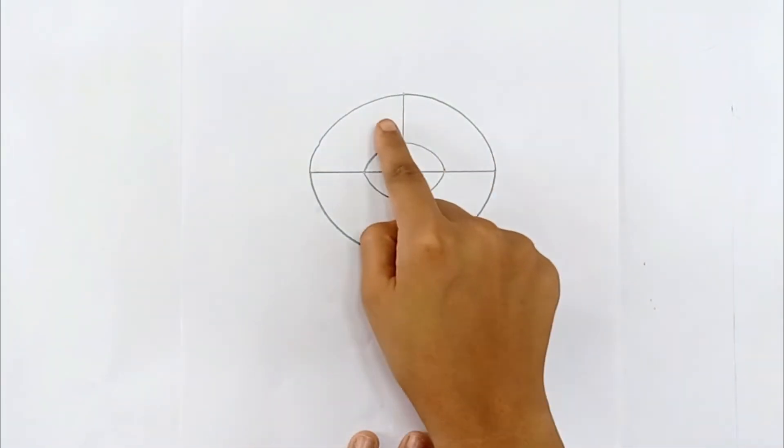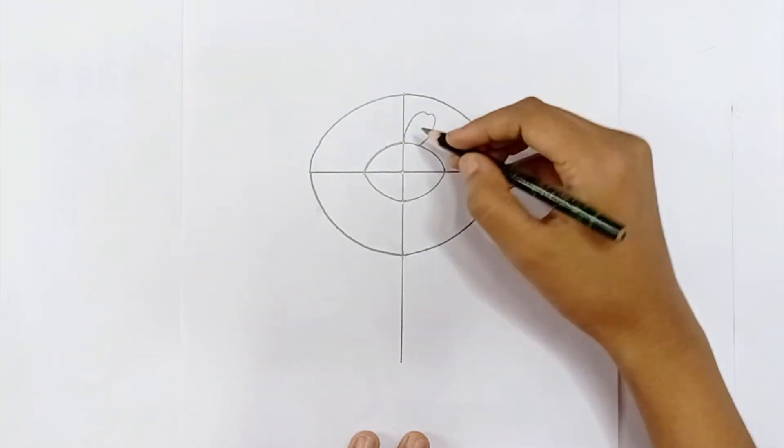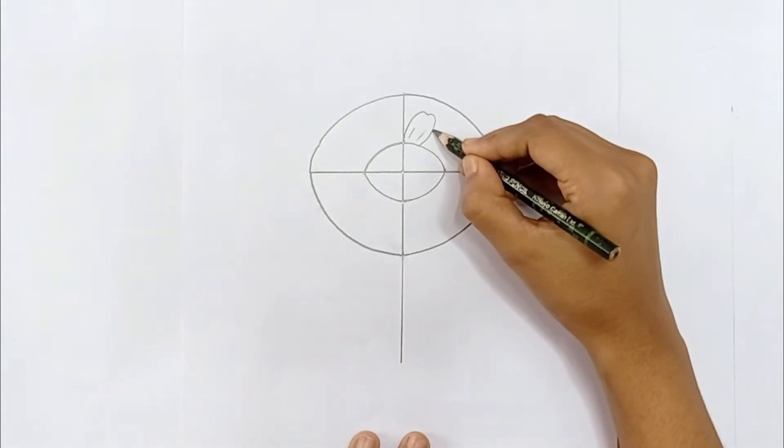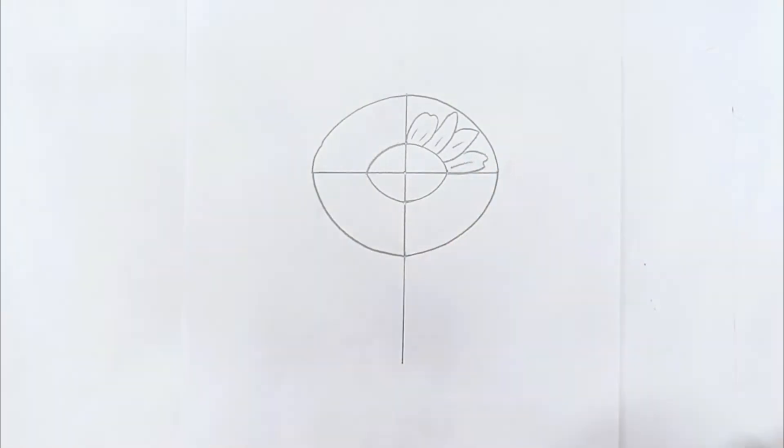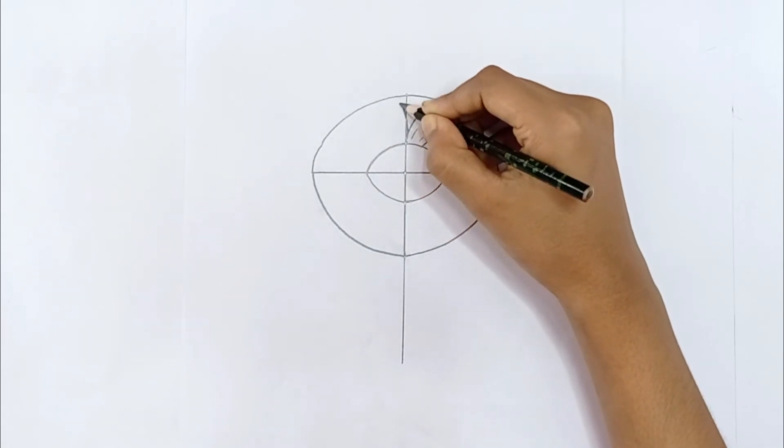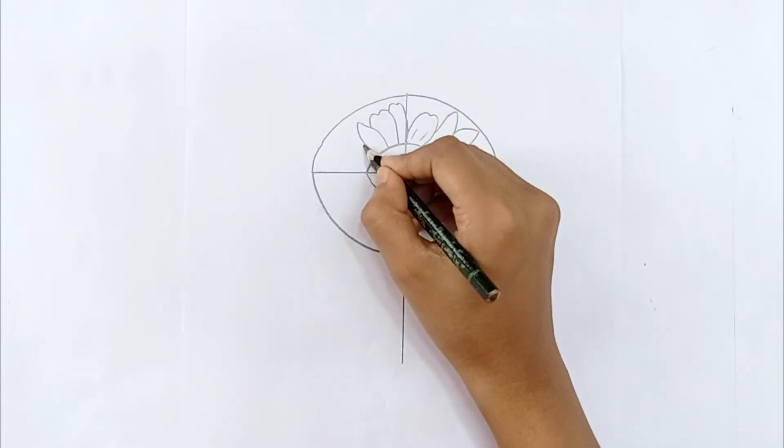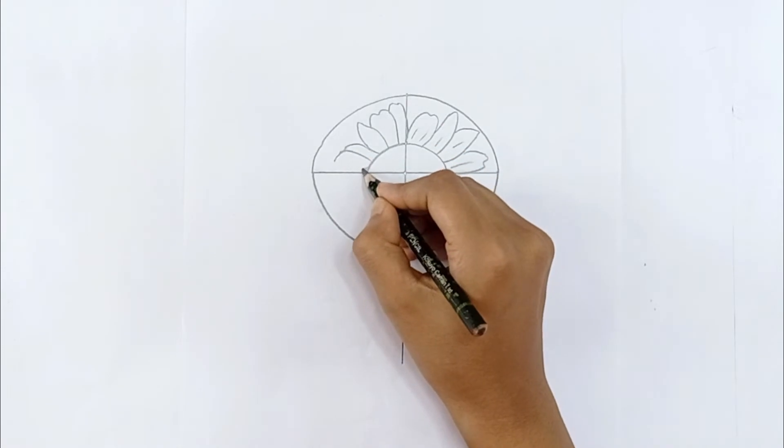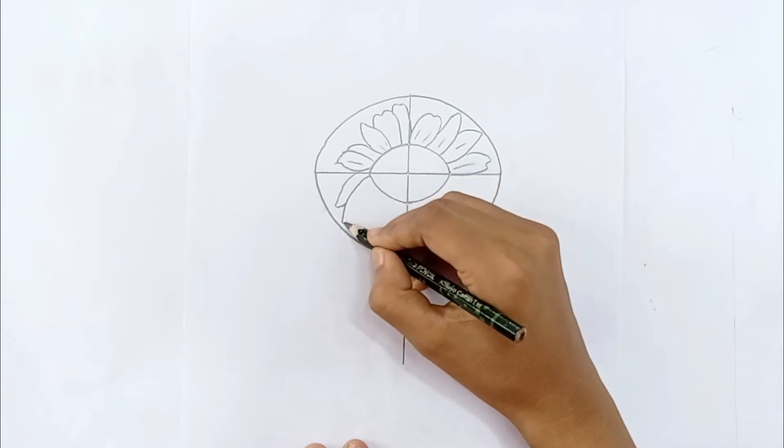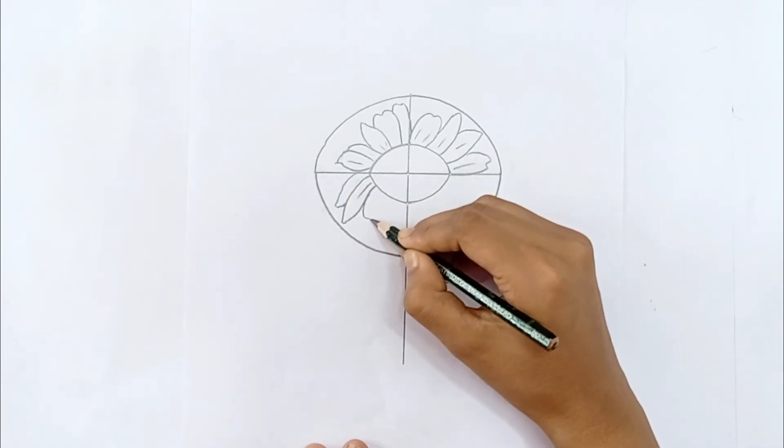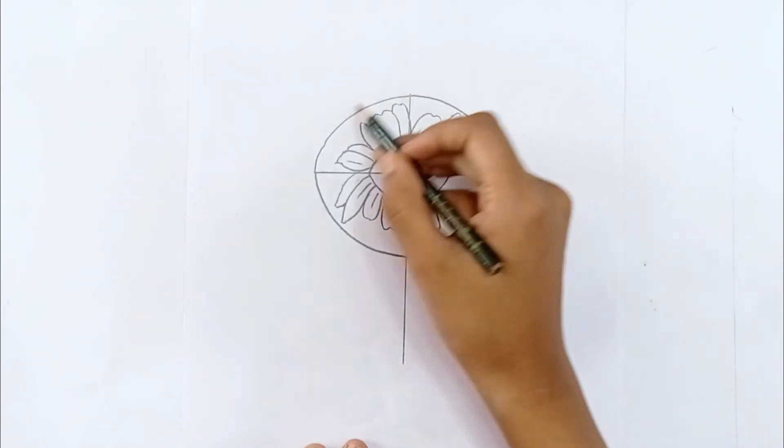First we draw the petals on the right and left, then we draw the petals below. The petals of the sunflower are of different types - some petals are long, some are short, some are thick and some are narrow. Now we will draw the petals on the left, then the petals at the bottom. We have to draw each petal of the flower in this oval shape.